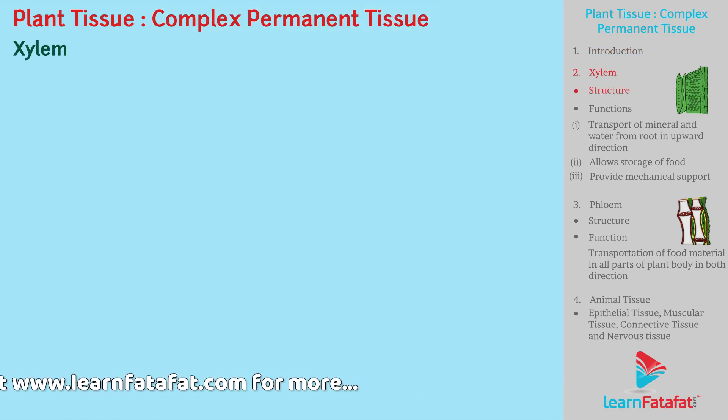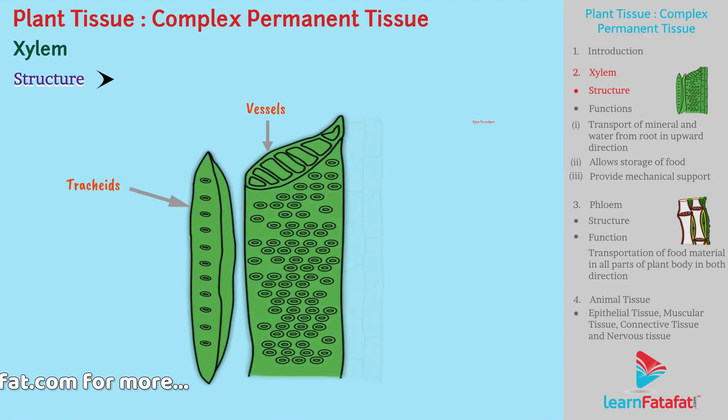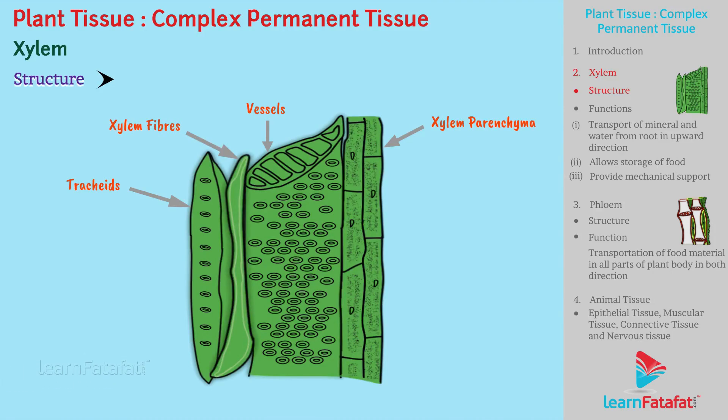Xylem is made up of four components: Tracheids, Vessels, Xylem Parenchyma, and Xylem Fibers.